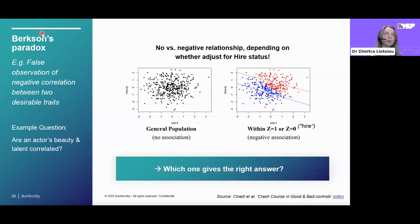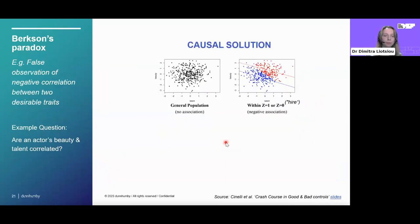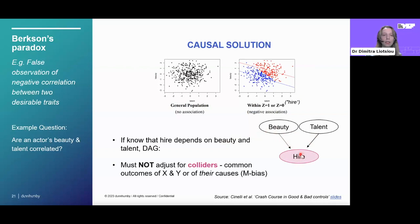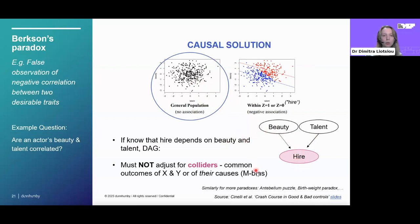Berkson's paradox is different: we tend to observe a falsely negative correlation between two desirable traits. For example, are an actor's beauty and talent correlated? In the general population we see no association, but if we adjust for whether an actor was hired to star as a lead in a movie, a negative association appears. Drawing the causal DAG: if being hired has possible causes in both beauty and talent, then being hired is a collider and we should not adjust for it. The right answer is to use the unadjusted data — we shouldn't condition on a collider.